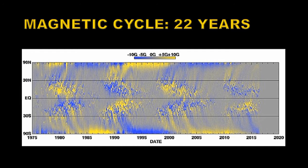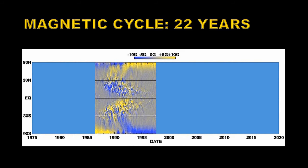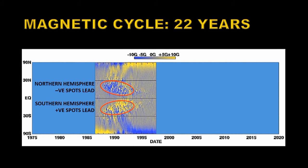The situation becomes even more complicated when you consider the magnetic cycle, which is twice as long as the sunspot cycle — a 22-year period. This diagram shows the latitudes at which magnetic field has appeared throughout each cycle. Each one of these structures is one cycle, and this is called a butterfly diagram because each cycle looks rather like a butterfly. At the beginning of solar cycle 22, you have negative polarity — blue — at the northern pole and positive polarity — yellow — at the south pole, with the Sun acting as a bar magnet.